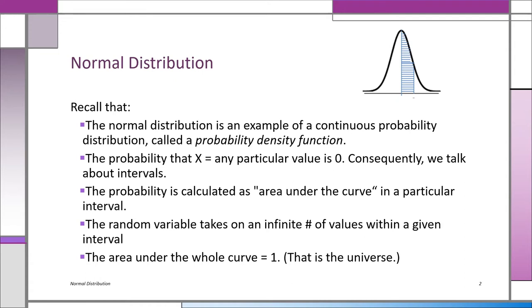The probability that X, our random variable, is equal to any one particular value must be zero, because it's a continuous random variable. The probability that it takes on any one value is so minuscule that it equals zero. We're talking about a continuous random variable that can take on any value, including fractional decimal values inside of an interval. So we talk about intervals and frame probability questions in terms of intervals.